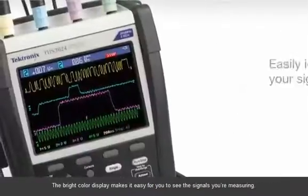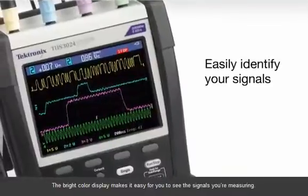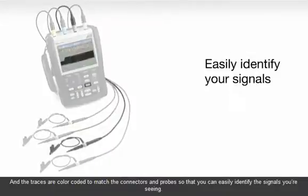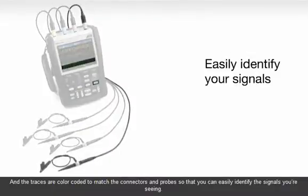The bright color display makes it easy for you to see the signals you're measuring, and the traces are color-coded to match the connectors and probes so that you can easily identify the signals you're seeing.